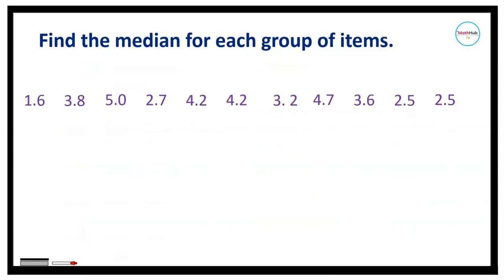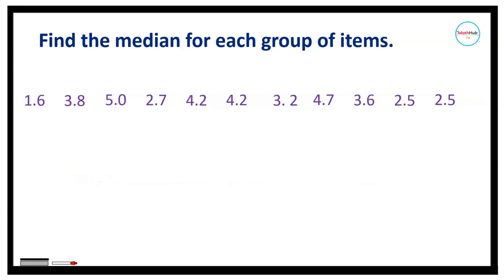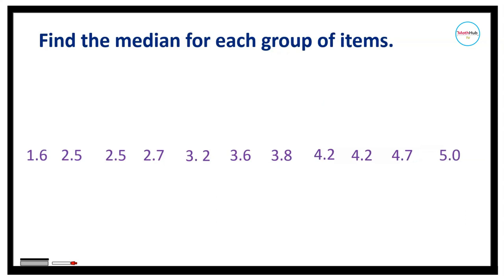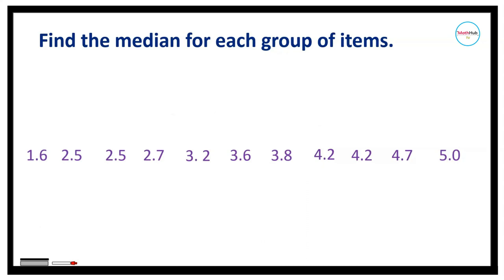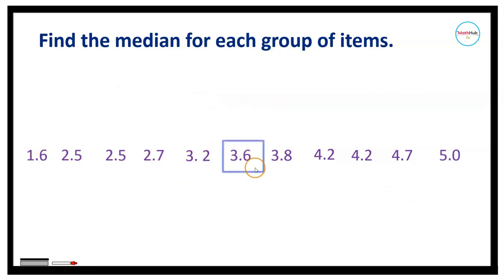For another example, consider this data set and find the median. Arrange from smallest to largest: 1.6, 2.5, 2.5, 2.7, 3.2, 3.6, 3.8, 4.2, 4.2, 4.7, 5.0. Count the items — there are 11, which is odd. Therefore, the median is the middle term. Dividing 11 by 2 gives 5.5, so it will be the sixth data entry, which is 3.6.